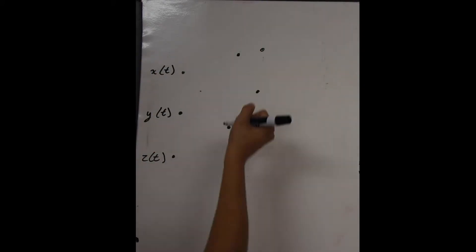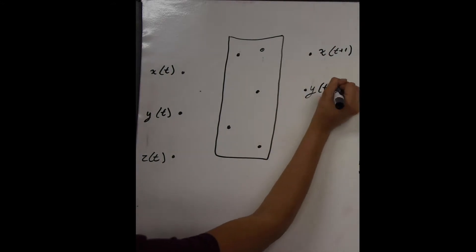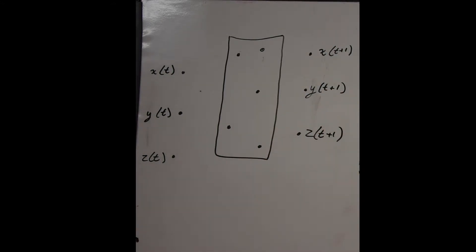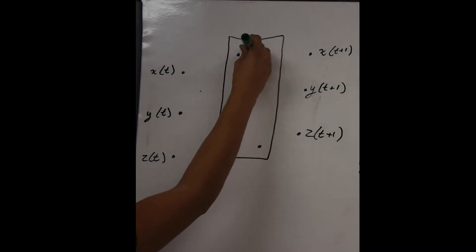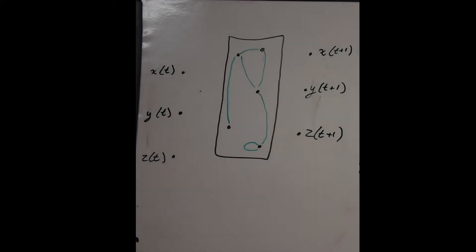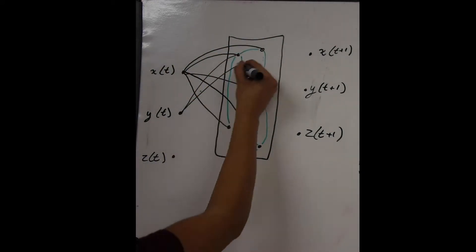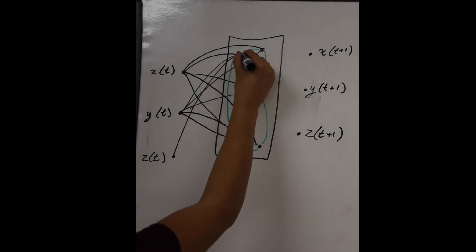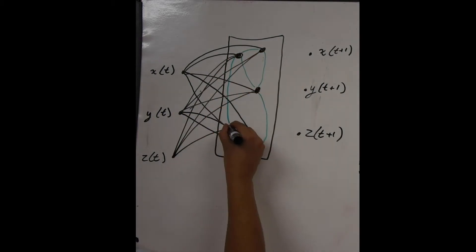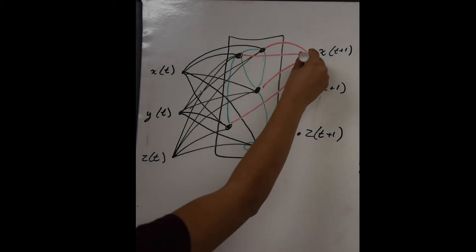Another part we might want to determine is future outputs. This is called the prediction case. Here, the knobs are twisted and turned the same way, but instead of outputting different variables during the same time step, the output becomes three variables at future time steps — a.k.a. a prediction of the chaotic system.